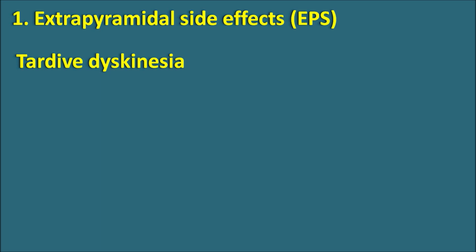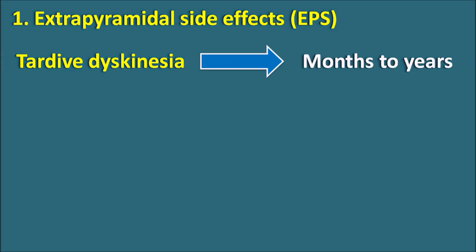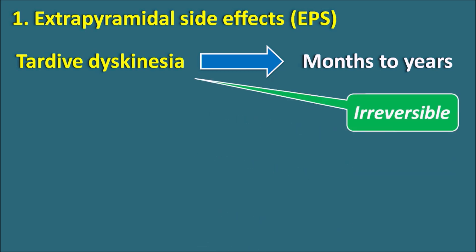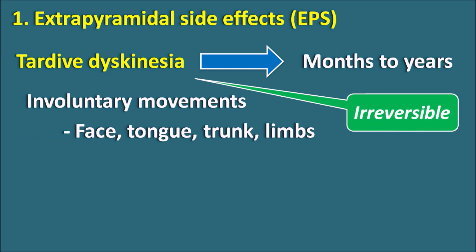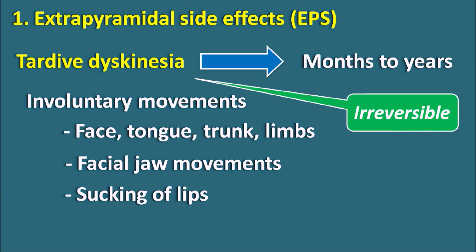The fourth phase is tardive dyskinesia — tardive meaning slowly developing, dyskinesia meaning disturbance in kinetic movements. These symptoms appear after months to years of treatment and are irreversible in nature, even after the drug is stopped. Patients show involuntary movements of the face, tongue, trunk, and limbs — including protrusion of the tongue, involuntary facial and jaw movements, and sucking and smacking of the lips. Tardive dyskinesia must be closely monitored because it cannot be restored.